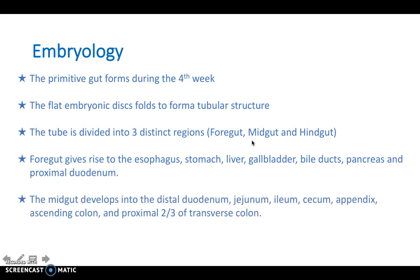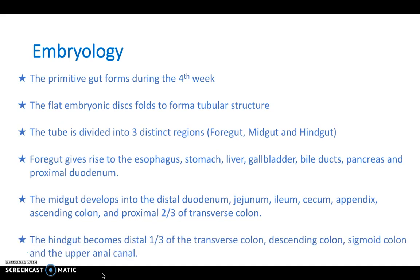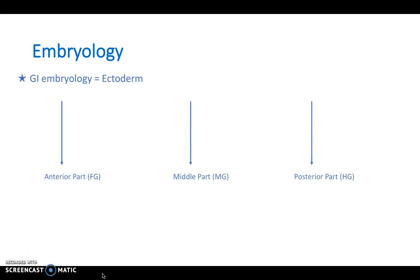The midgut gives rise to the second half of the duodenum, the jejunum and ileum, the cecum, the appendix, the ascending colon, and the proximal two-thirds of the transverse colon. The hindgut gives rise to the last third of the transverse colon, the descending colon and sigmoid colon, and the upper anal canal. Remember that the connective tissue, smooth muscle, and serosa all arise from splanchnopleuric mesoderm, not the ectoderm like the rest of the GI tract.